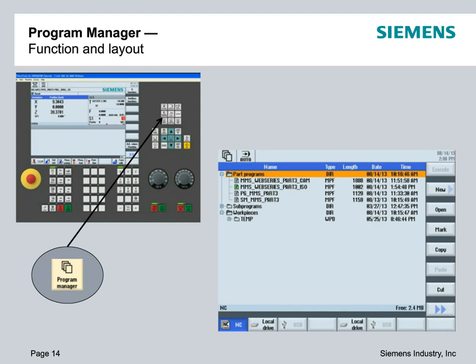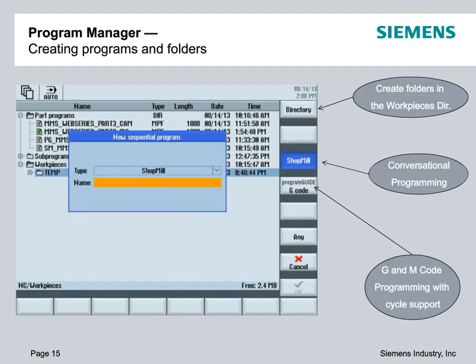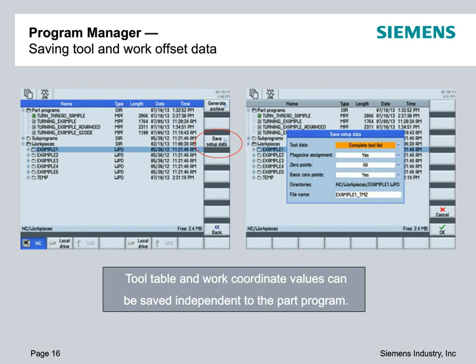From there, we're going to start creating our programs: a conversational ShopMill program as well as a G-code program in the Program Guide format. We'll also look at some of the other tools or features in the program manager area, such as saving tool files, which gives you a backup of your offset table — saving all of your data including tool offsets and coordinates.